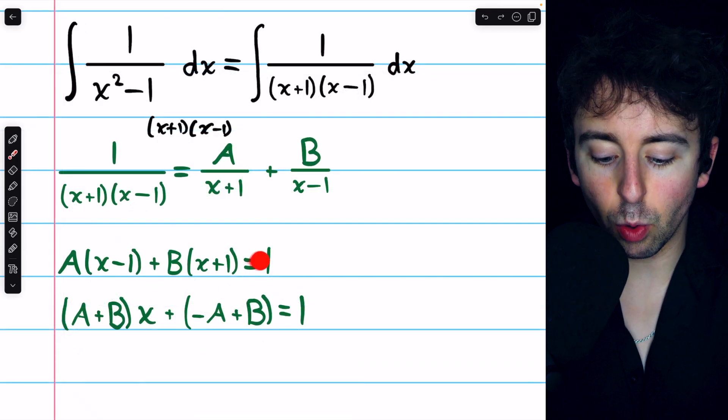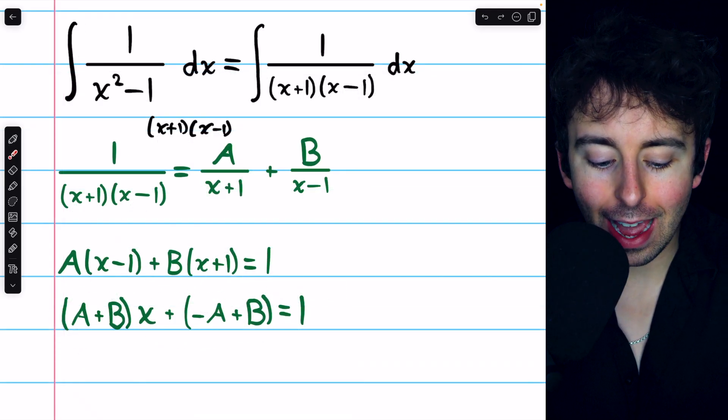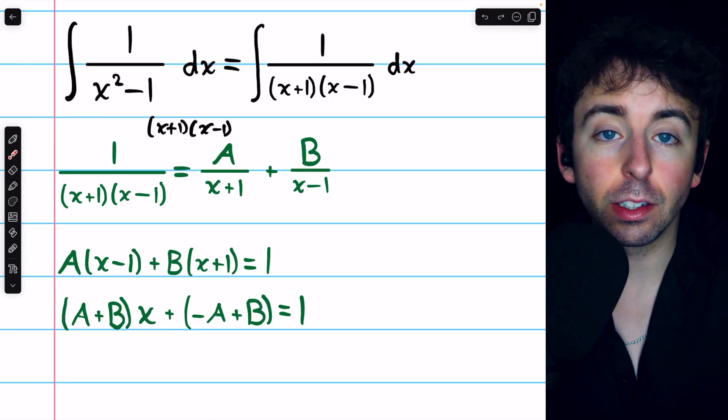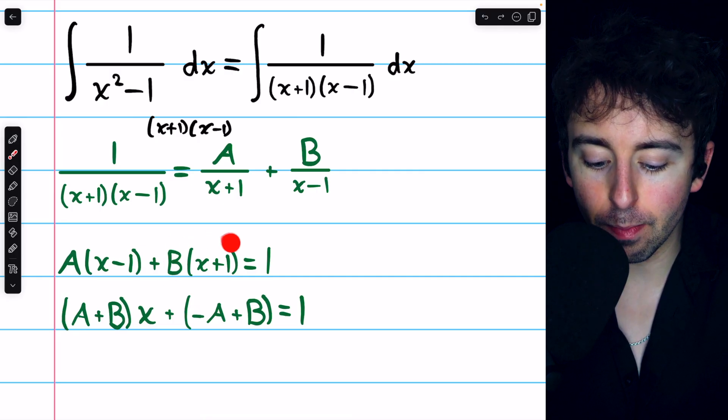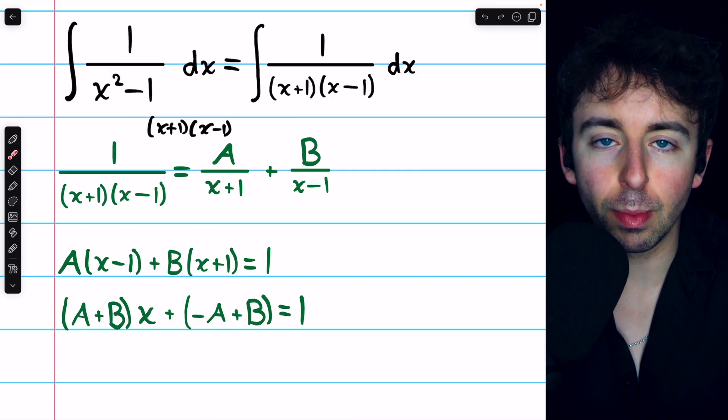That gives us this equation, which we can then rewrite like this. Gathering the x terms, we have Ax plus Bx, so A plus B times x. As for the constants, we have B and we have minus A, so negative A plus B.